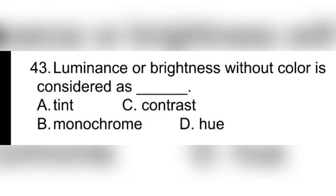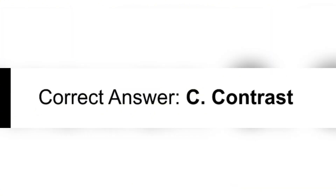Question 43. Luminance or brightness without color is considered as ______. A. Tint. B. Monochrome. C. Contrast. D. Hue. Correct answer: C. Contrast.